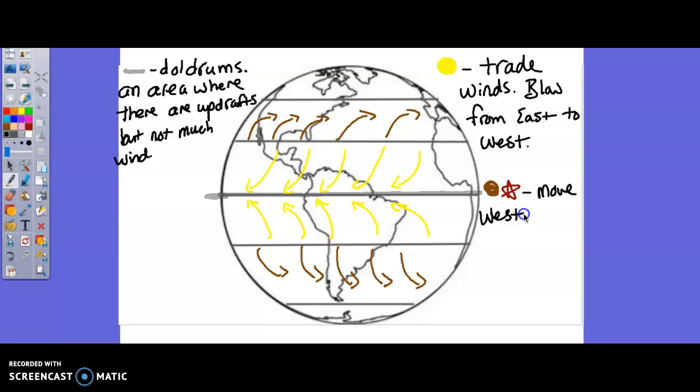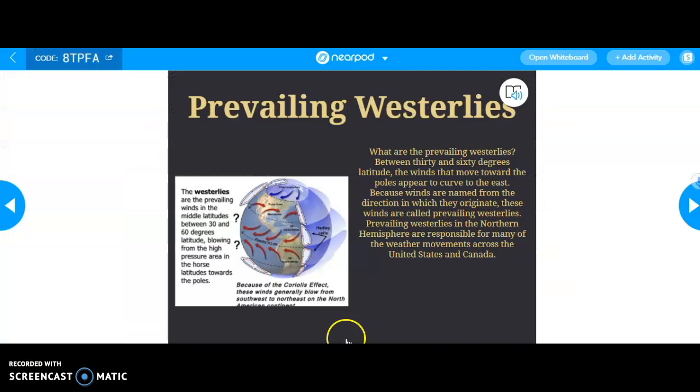And it's so important that I'm actually going to put a big red star beside it as well. Move west to east, and they move weather across the U.S. The prevailing westerlies are probably the most important. While you guys are copying that down, we'll get this next thing ready for us.